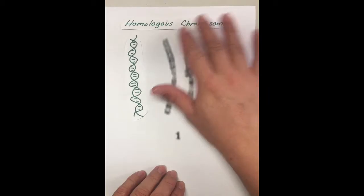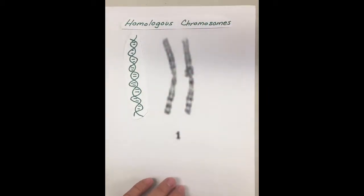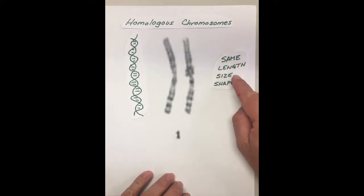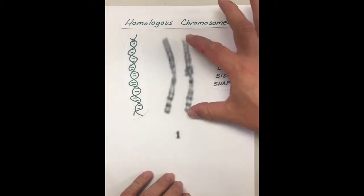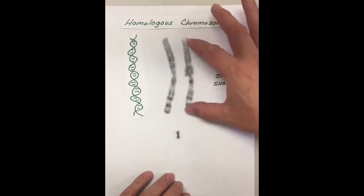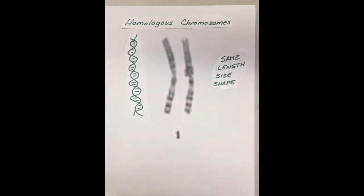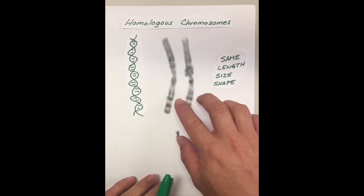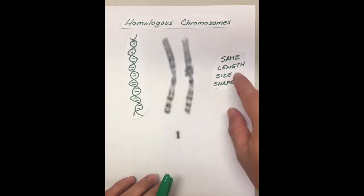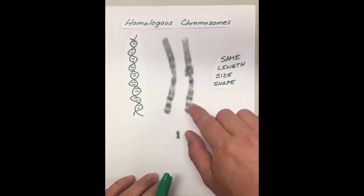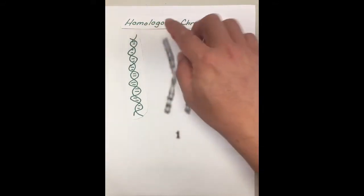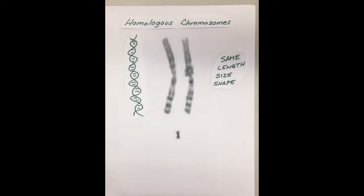Now let's talk about homologous chromosomes. Homologous chromosomes are chromosomes that have the same size and shape. Notice how these two chromosomes are the same length, same thickness, and the same shape. When you have two chromosomes that are the same size and same shape, we say that these chromosomes are homologous — meaning they match.